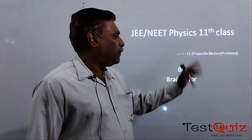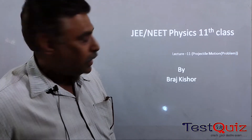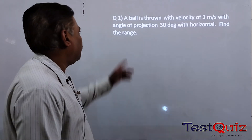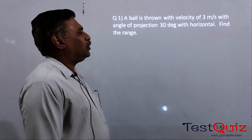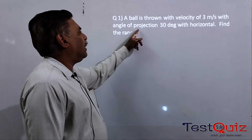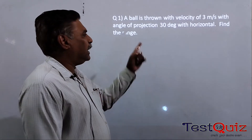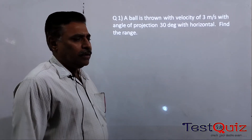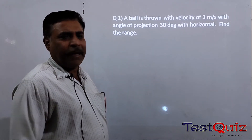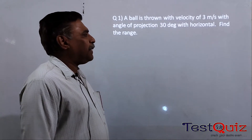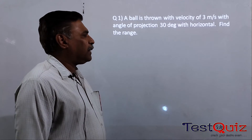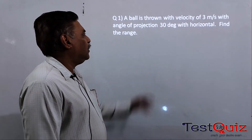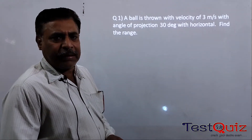So what do we do? We will solve this problem. The first problem is: a ball is thrown with a velocity of 3 meters per second with the angle of projection 30 degrees with the horizontal. Find the range. So first of all, you need to make a diagram. If you make a diagram for this type of problem, you can do it very comfortably.